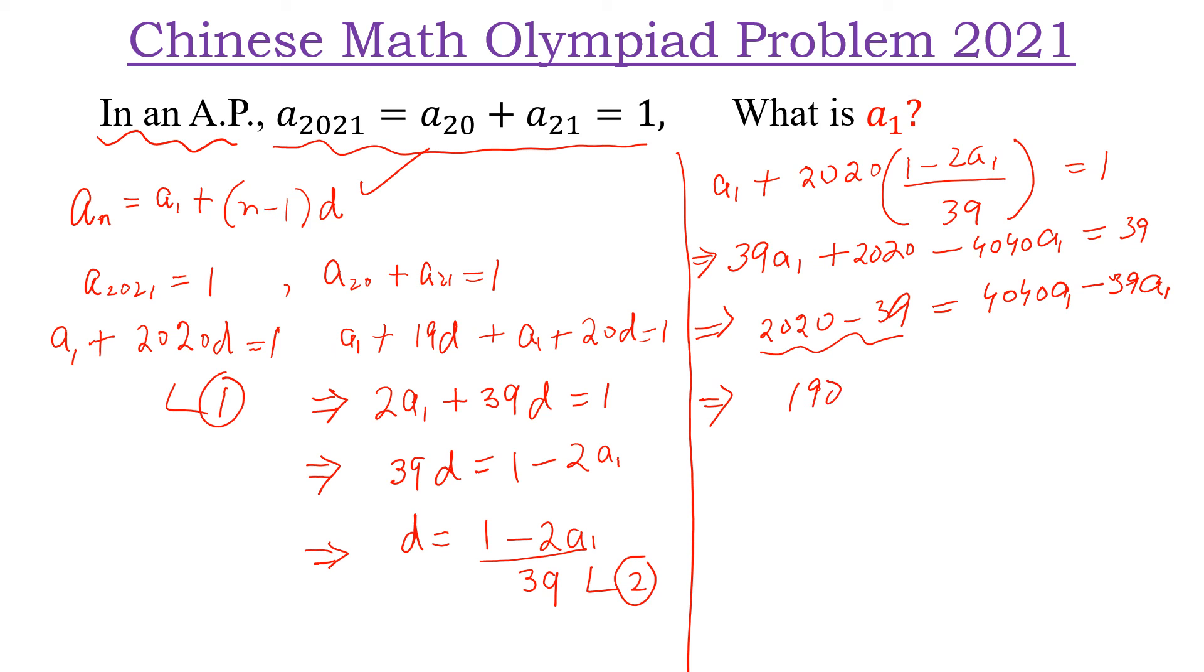From here, we can write 1981 is equal to 4001A₁. And this is the required answer.